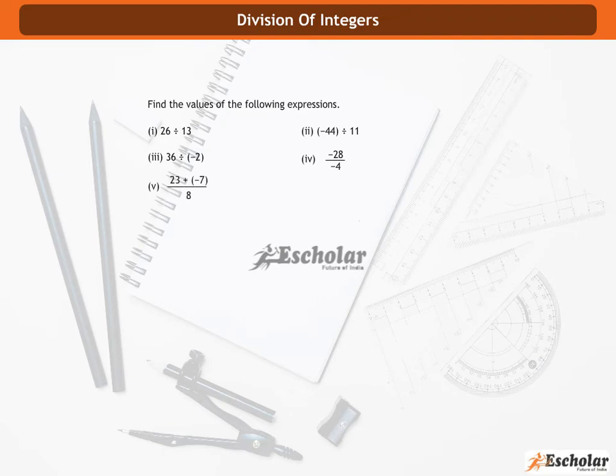23 plus minus 7, divided by 8. 48 divided by minus 6 minus plus 2.